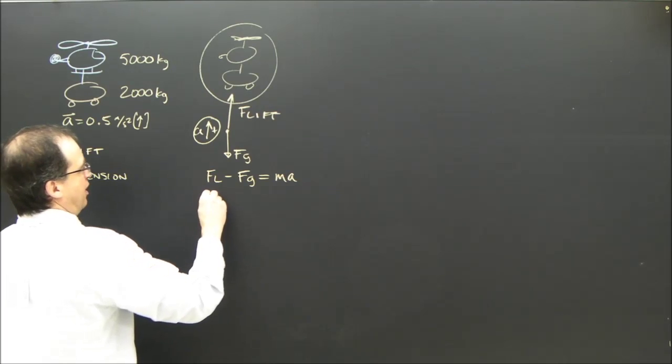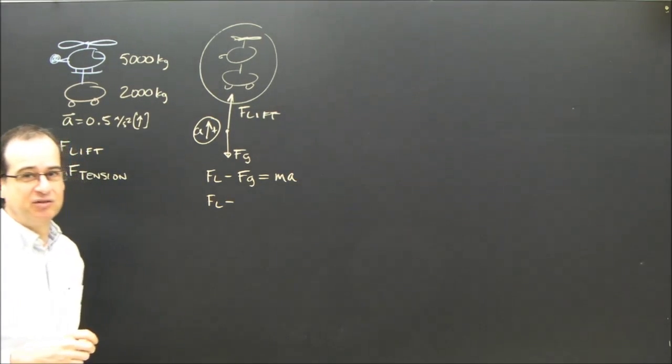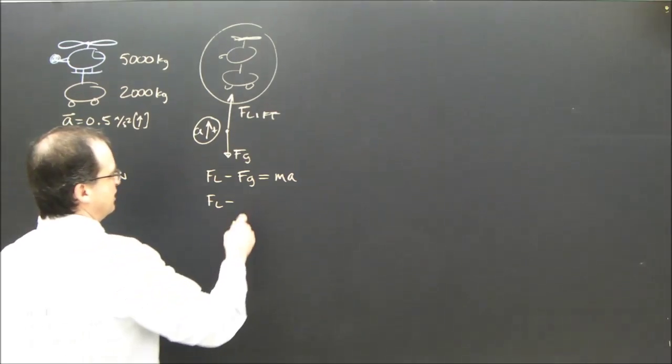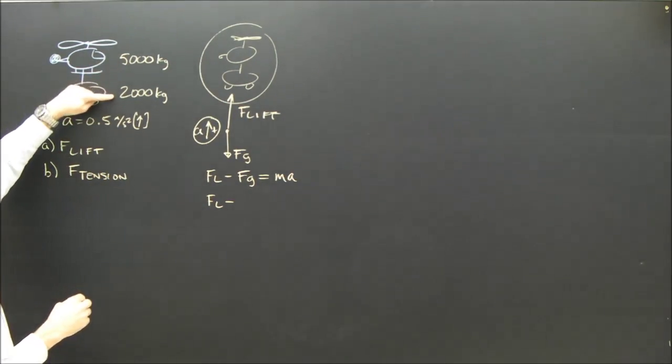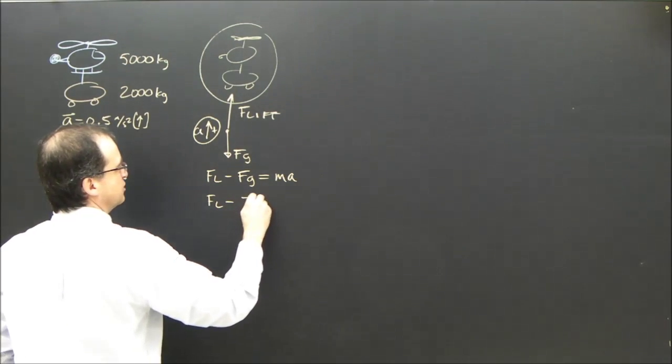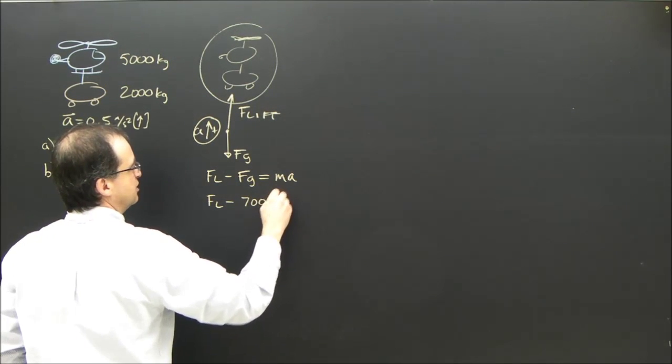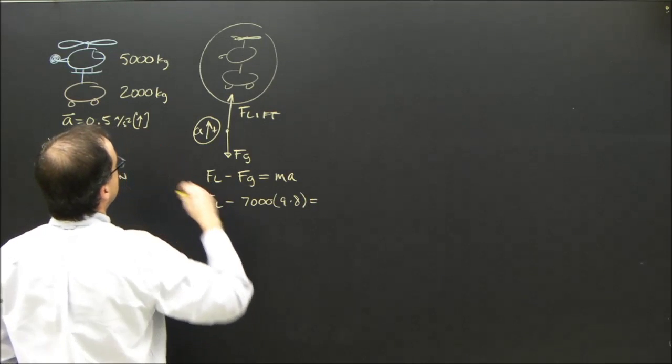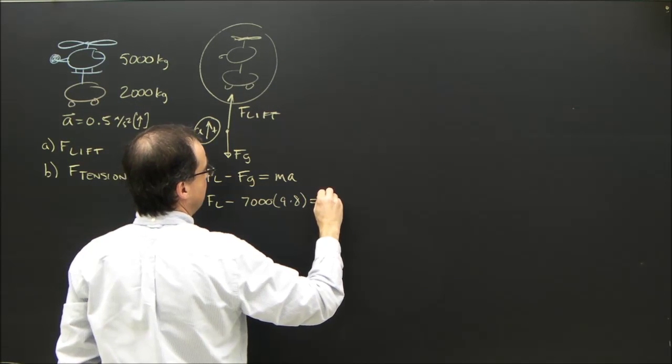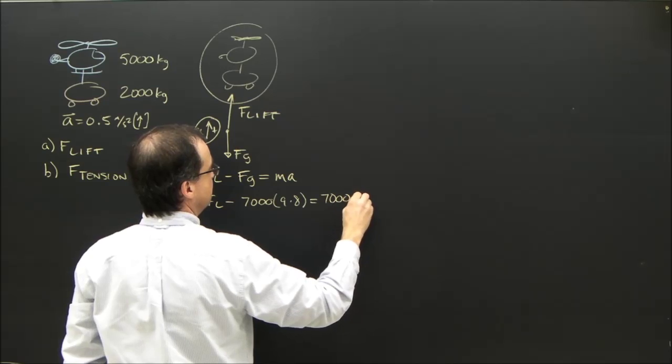So we got FL, which is what I'm looking for, minus FG. Well, how do we calculate FG? It's MG. So what's the mass? Well, we got 5,000 and 2,000.